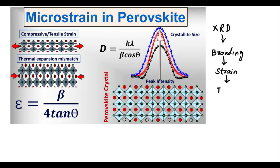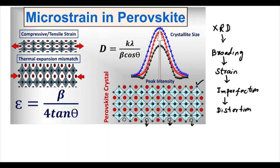For the simplest approach, we may have some imperfection in the crystal of the perovskite. As we can see here, in this portion we have some defects — there is some imperfection, some missing elements. There may also be some distortion, such as tensile stress or compressive stress, expansion, or mismatching of the crystal rails. We should consider this broadening as it indicates strain caused by imperfection or distortion.